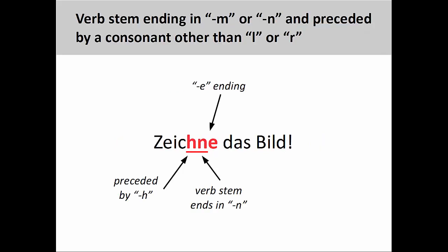Finally, if the verb stem ends in m or n and is preceded by a consonant other than l or r, then we also need to add an e to the imperative form. Since the verb stem in zeichnen, meaning 'to draw,' ends in an n and is preceded by ch, we must add an e to the imperative form: 'Zeichne das Bild,' 'draw the picture.'